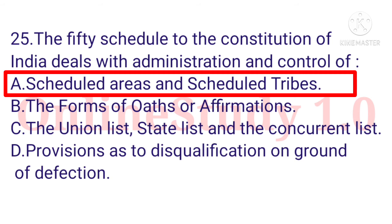Question number 25: The 5th Schedule to the Constitution of India deals with administration and control of option A: Scheduled Areas and Scheduled Tribes.